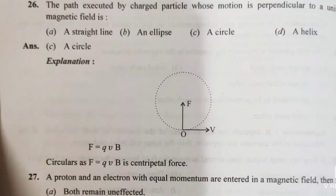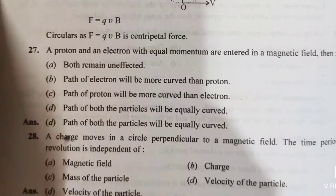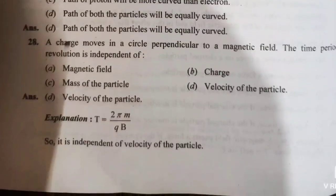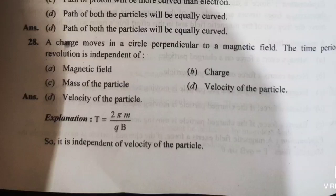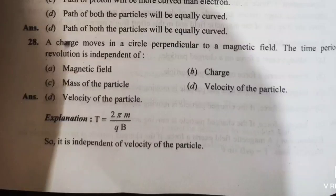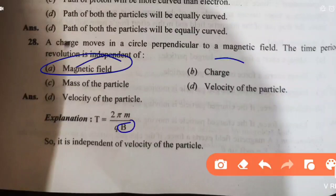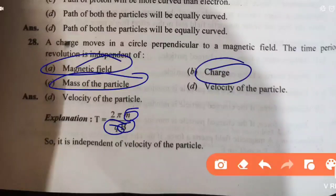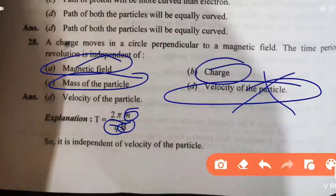Questions 23, 24, 25, 26, and 27 are easy — try yourself. For question 28: a charge moves in a circular path perpendicular to the magnetic field. The time period T = 2πm / qB. Looking at the formula, it depends on magnetic field B, charge q, and mass m — but not on velocity. So the answer is D.